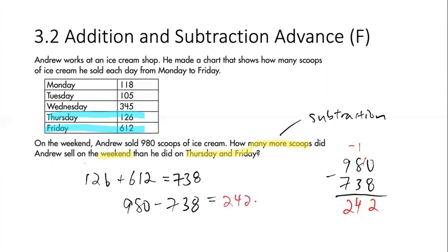So the answer is 242. So Andrew sold 242 more scoops on the weekend than he did on Thursday and Friday. So I said that slowly so you can write that down.